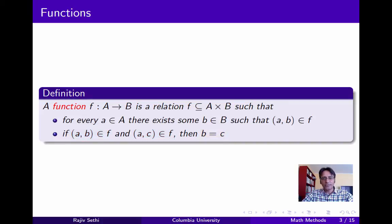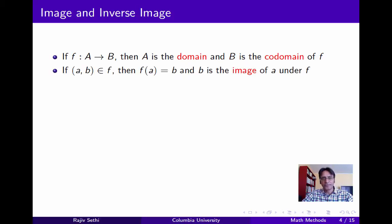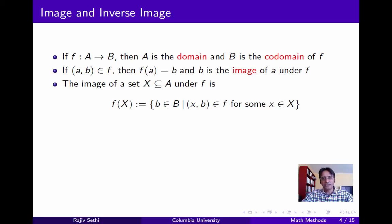If we drop the second requirement we end up with a correspondence, and we'll discuss these later in the course. Now I'll quickly go through some definitions that will be familiar to most of you. If F is a function from A to B, A is called the domain and B the co-domain of F. If the ordered pair (A, B) is in F, then we say that F(A) equals B, and call B the image of A under F.